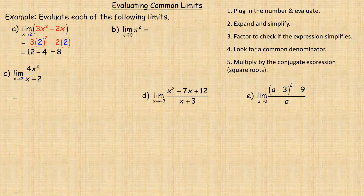In example b, the limit of pi squared as x tends towards 0. Notice that pi squared has no x in it whatsoever, so it really wouldn't matter what x is tending towards — it could be 0, negative 100, or 5 billion. The limit here would just be pi squared because pi squared is independent of x.